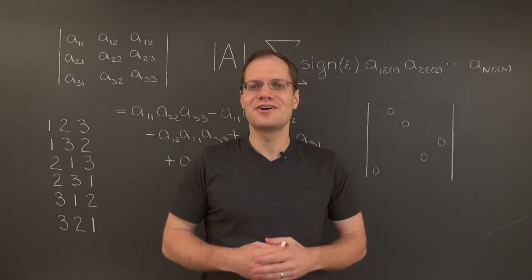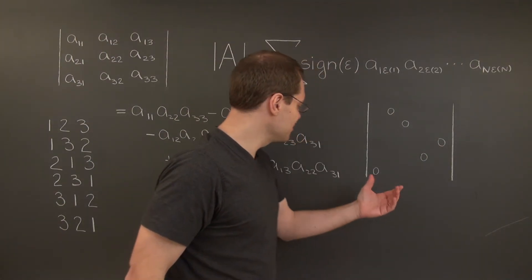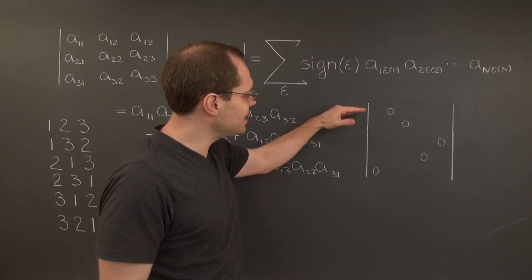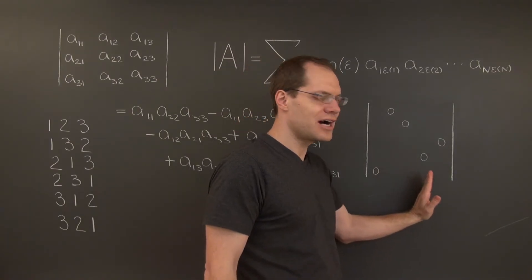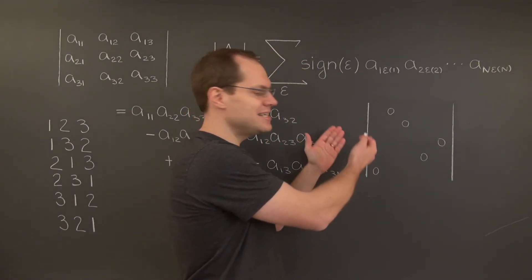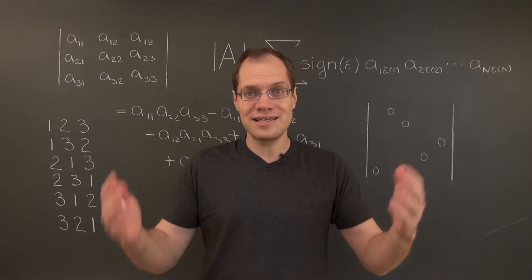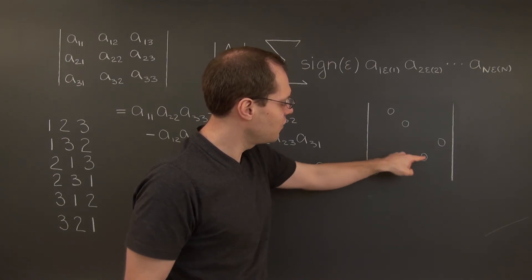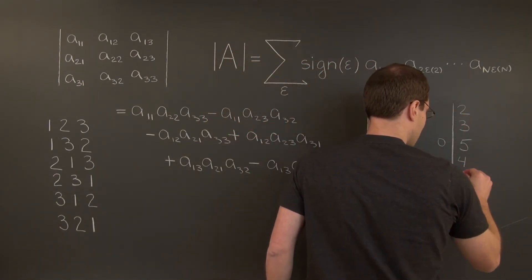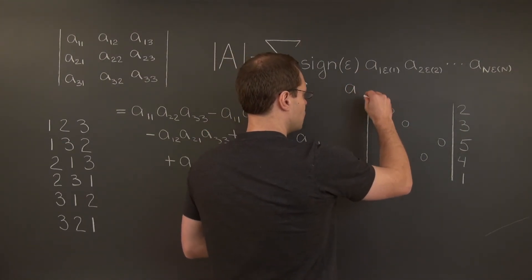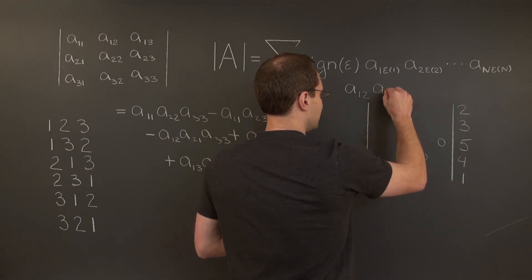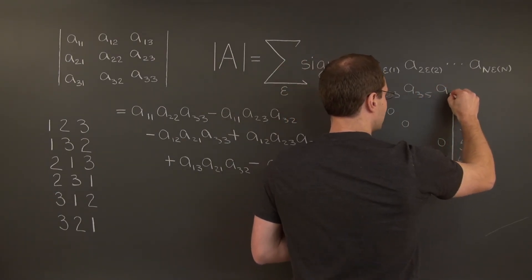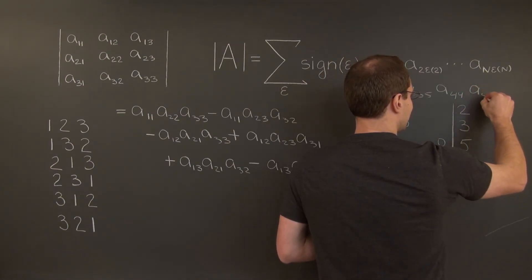Finally, a short illustration for 5×5 determinants. We're going to look at a single term out of 120. You can see how I selected the entries — there's exactly one in each row and one in each column. There are 119 other ways of doing this, corresponding to the other 119 terms in the sum. This term corresponds to the permutation 2, 3, 5, 4, 1 — so it's the term A12 · A23 · A35 · A44 · A51.